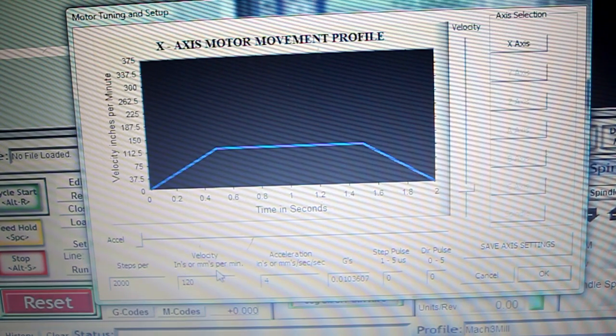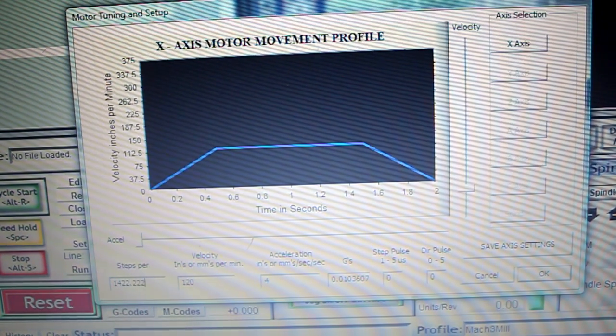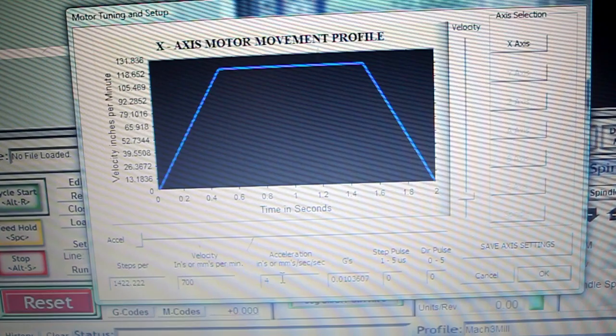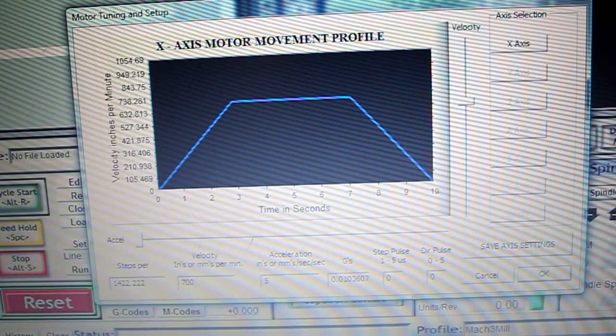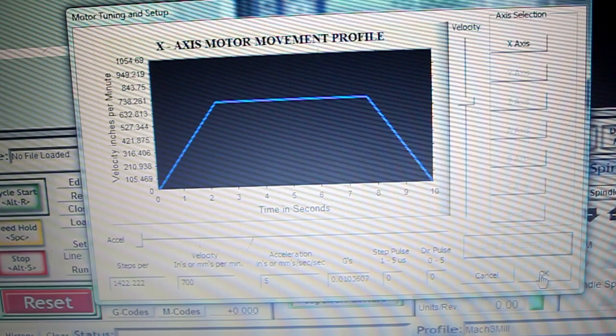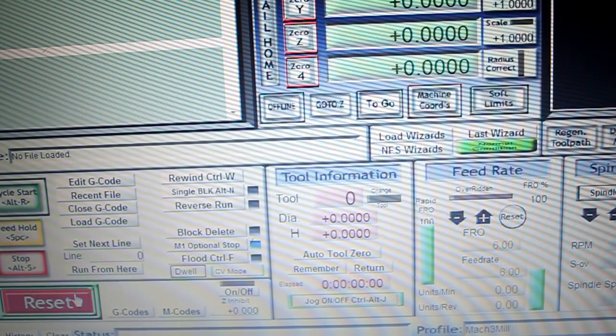Now we need to plug in the numbers that we just determined. For the steps per, which is in this case steps per inch, we determined 1422.222 for the x-axis and my velocity, I'm going to use 700 inches per minute and the acceleration I'm going to go to 5. I'm going to keep the rest at default and we have to make sure that we save the axis settings. Press OK and we can go ahead and try to move the motor.